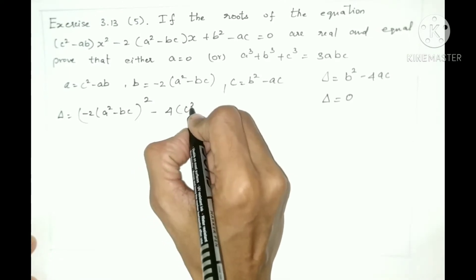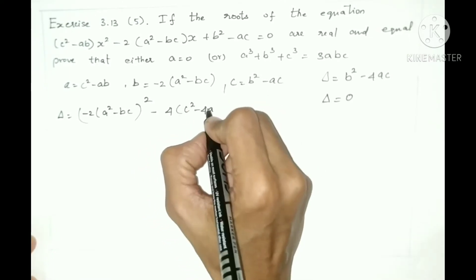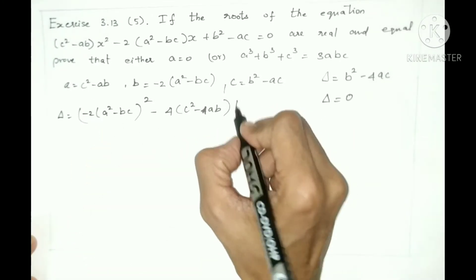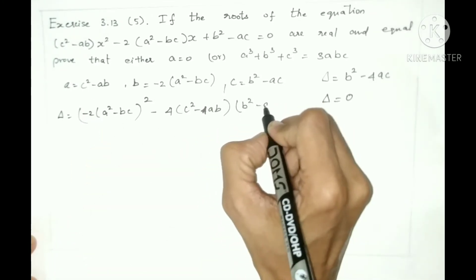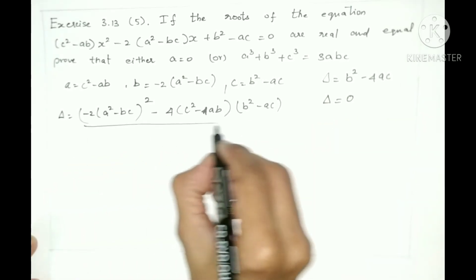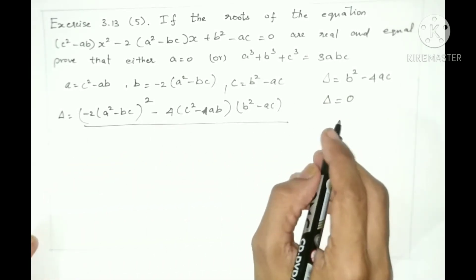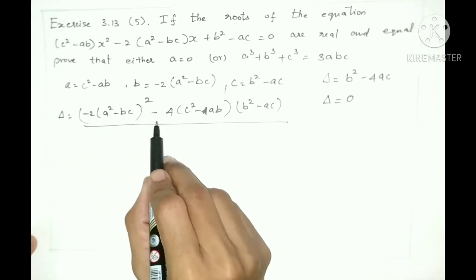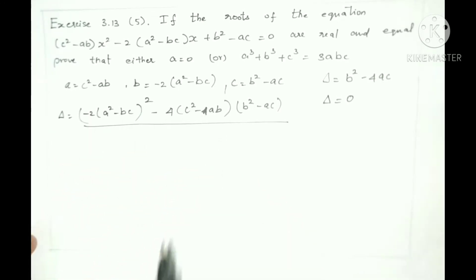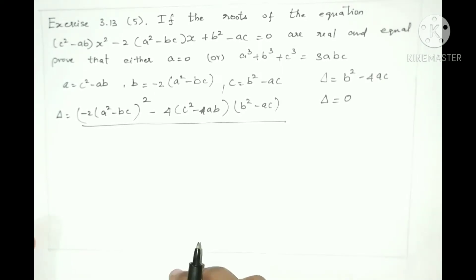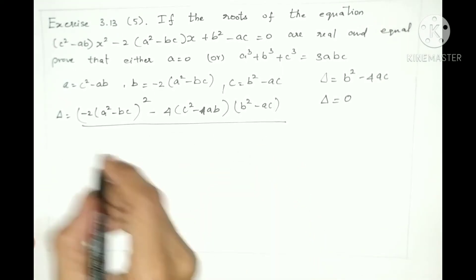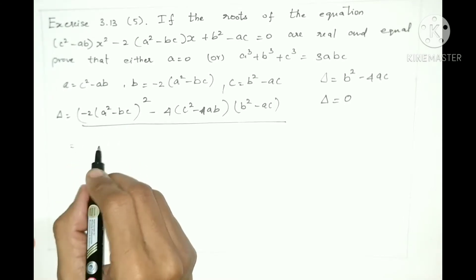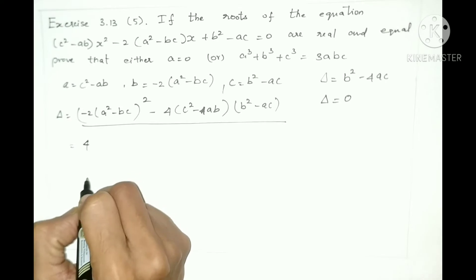Then 4ac: A is c squared minus ab, and C is b squared minus ac. So delta equals b squared minus 4ac. Squaring the b term — minus 2 squared — gives us 4, since minus times minus is plus.